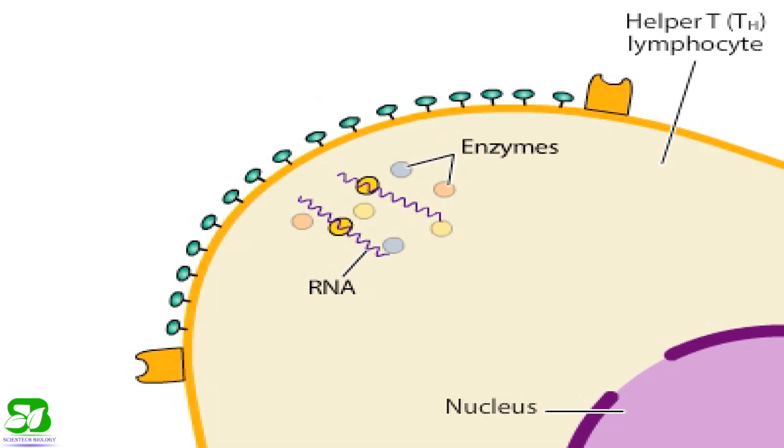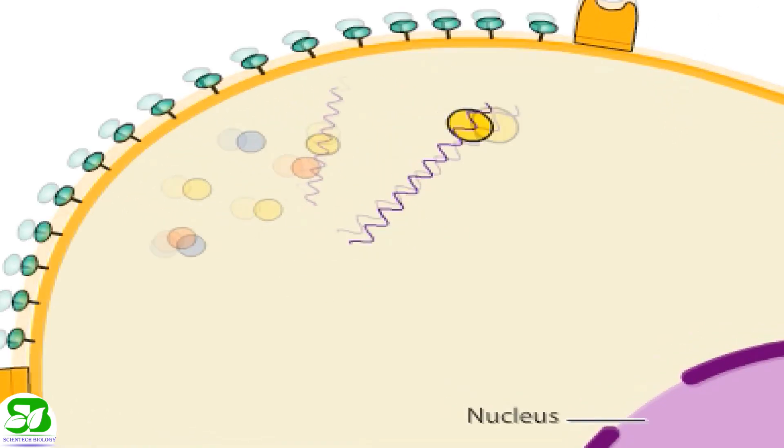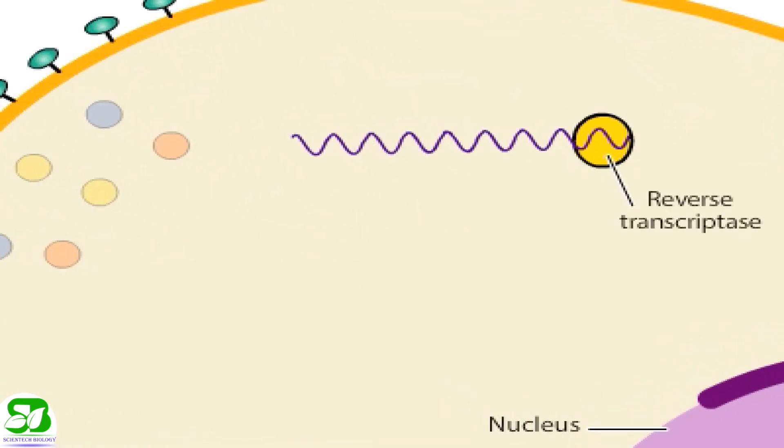Before the virus can commandeer the cell to make more virus, viral enzymes must first convert the viral RNA into DNA. The viral enzyme reverse transcriptase copies the RNA into complementary DNA or cDNA.